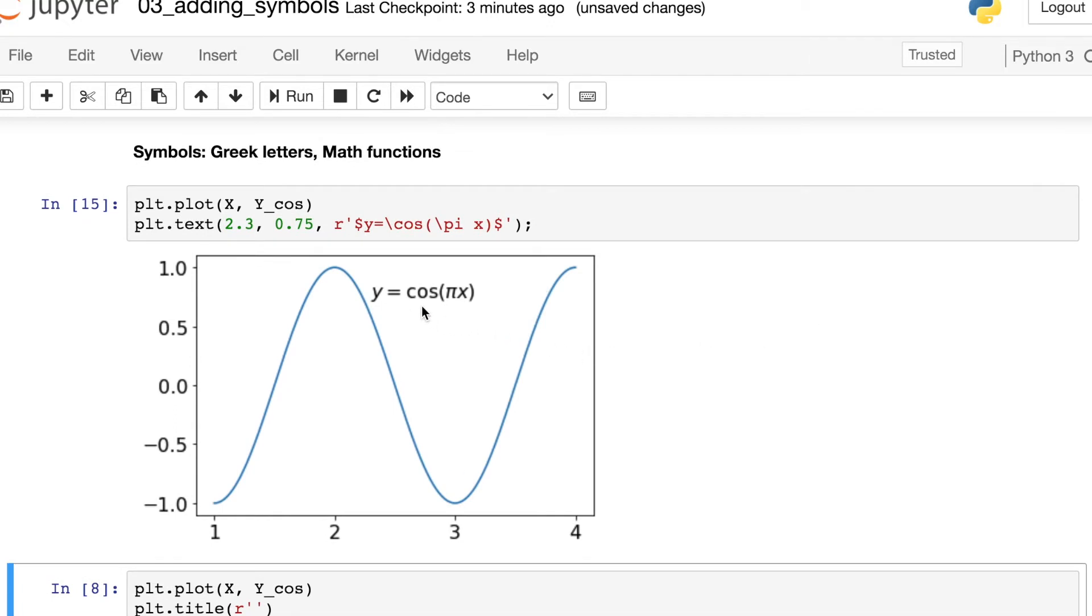Now we see the appropriate Y equals cosine of pi times X. So if you have these new symbols or functions that you want to use from TeX, typically the way that you're going to do that is use this backslash and then the name of that symbol or function.